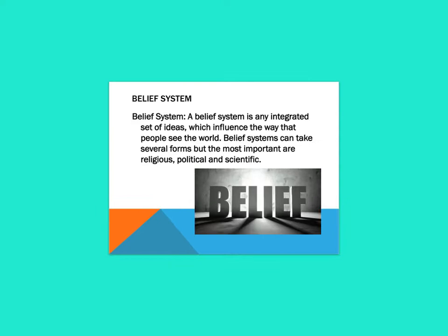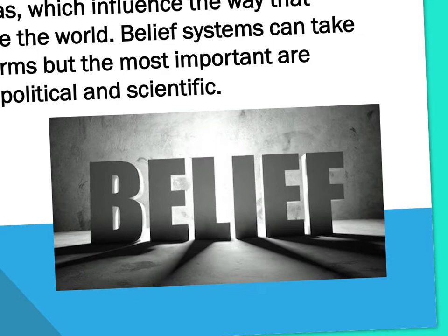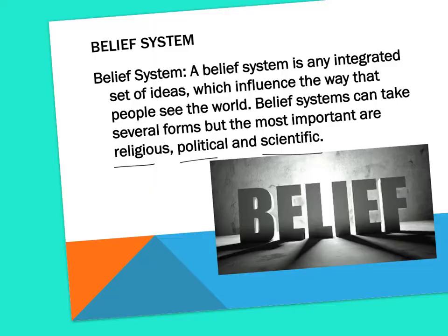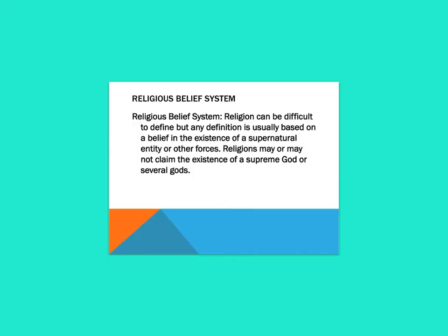A belief system is any integrated set of ideas which influences the way that people see the world. Belief systems can take several forms, but the most important types are religious, political, and scientific. It is important to realise that there are these three major belief systems that influence individuals' lives, because often we just get focused down on one or the other.